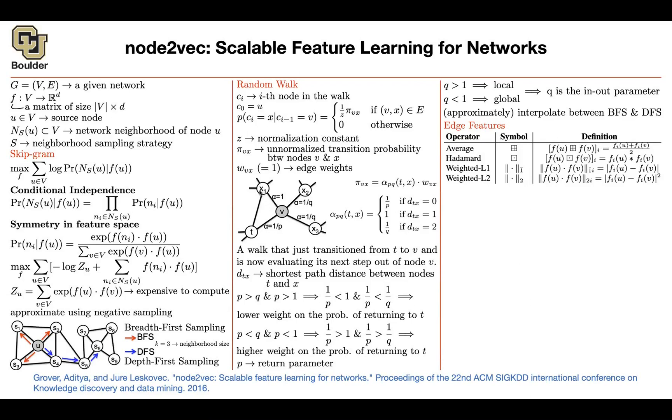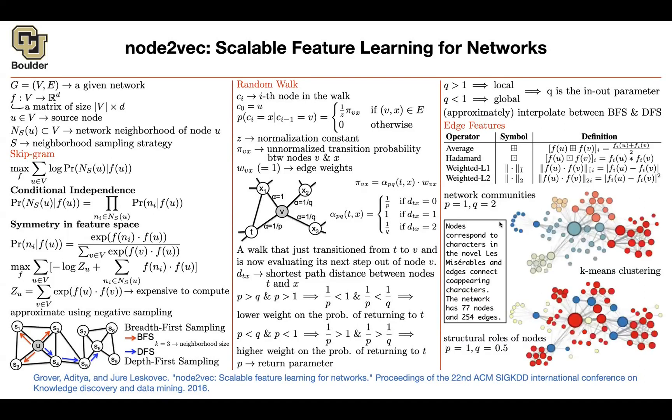You can average out the feature for this node and the other node. You can do a Hadamard product between the features of those two nodes, giving you that edge. You can do weighted L1 or weighted L2. And you can read the paper, which one is better. And that depends on your data set again.